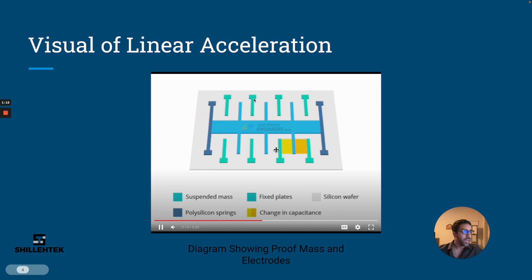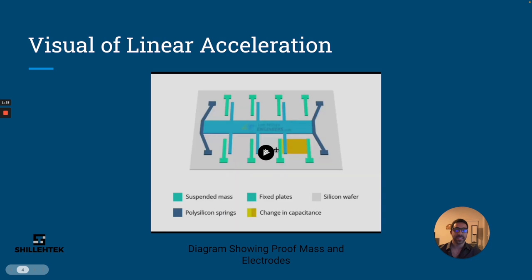As you can see in the yellow on the bottom right there, that would be a change in capacitance as the plate moves between the fixed electrodes. It's changing capacitance which in turn gets changed to acceleration. So that's the premise behind the acceleration values and how we get them.